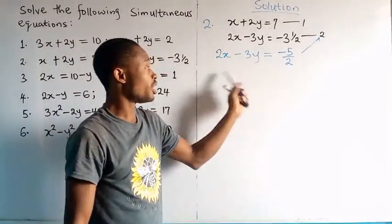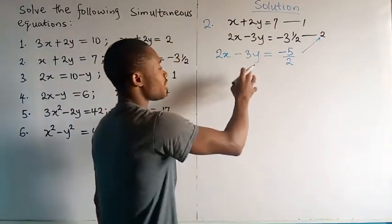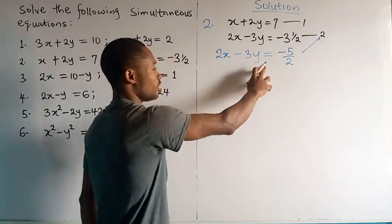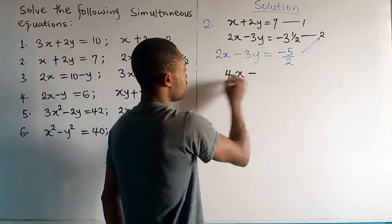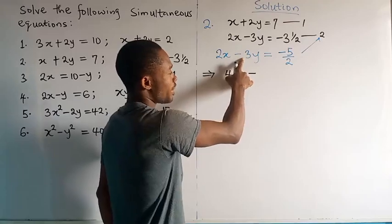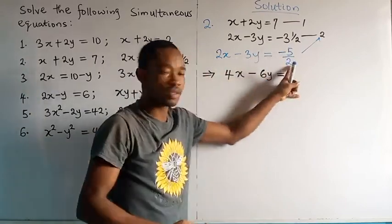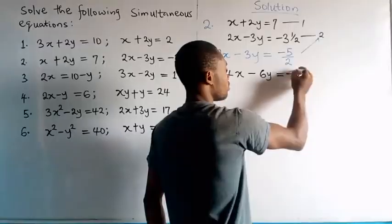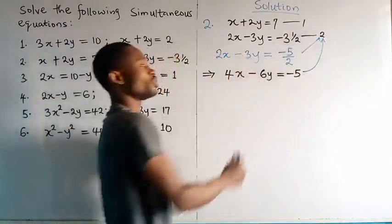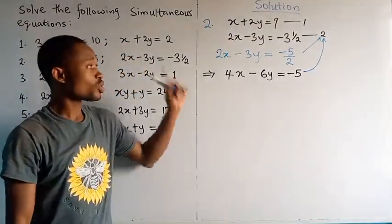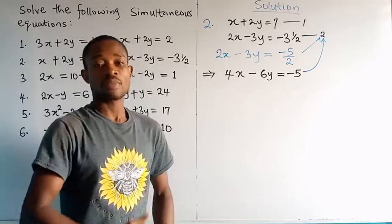I don't want to work with fractions, so I'll clear the fraction by multiplying through by the LCM. The denominators on both sides are 1, 1, and 2, so the LCM is 2. Multiplying each term of equation 2 by 2: 2 × 2x = 4x; 2 × (−3y) = −6y; 2 × (−5/2) = −5. So equation 2 becomes 4x − 6y = −5. This is equation 2 proper, and now I'm ready to solve.